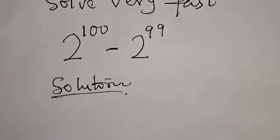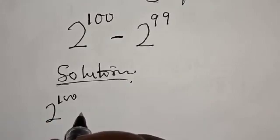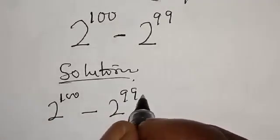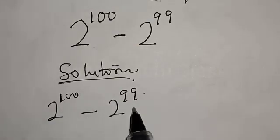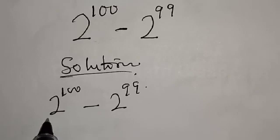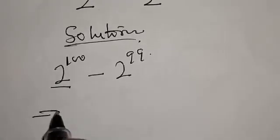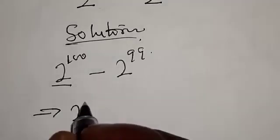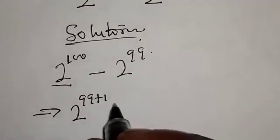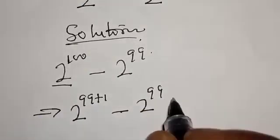Solution: we have 2 raised to power 100 minus 2 raised to power 99. We know that 100 minus 99 is equal to 1, therefore let's look at how we can manipulate this. This implies that 100 can be written as 2 raised to power 99 plus 1, then minus 2 raised to power 99.